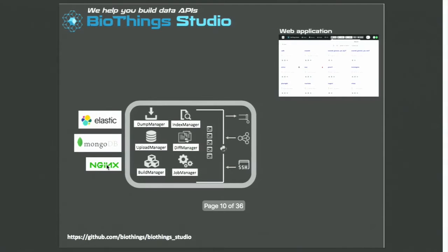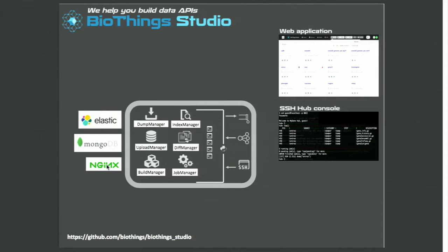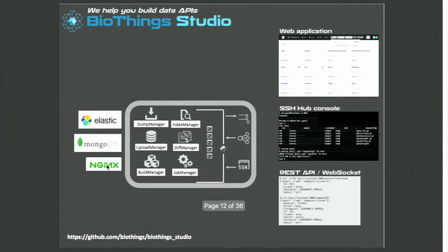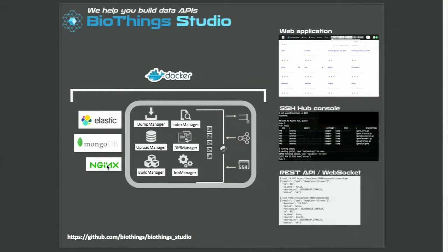You can access the Studio using a web application, which we'll look at more closely next. You can also use the SSH Hub console, which gives access to a Python terminal inside the application for more advanced usage. Finally, we have a REST API for third-party integration. All of this is available as a Docker image and can be used by anyone who wants to build an API or contribute to an existing Biosync API.